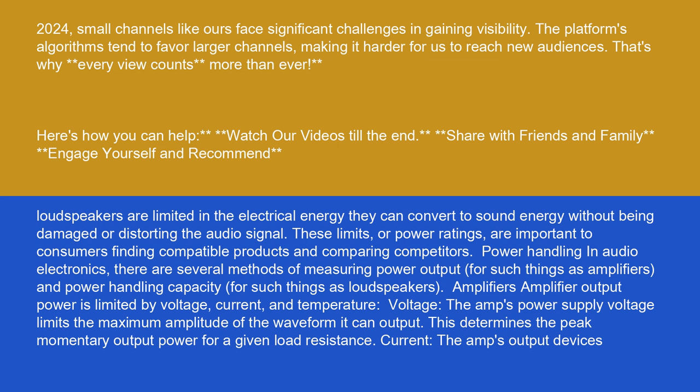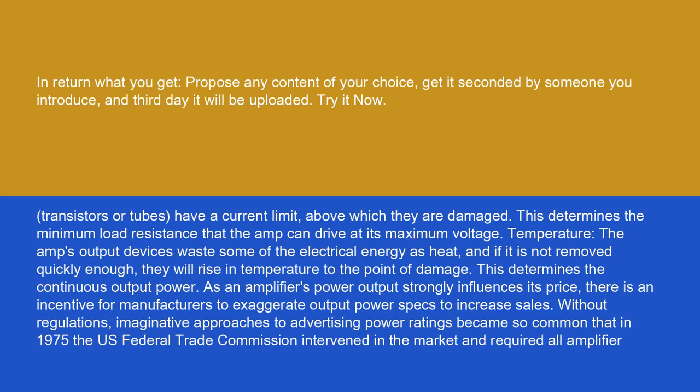Voltage: The amp's power supply voltage limits the maximum amplitude of the waveform it can output. This determines the peak momentary output power for a given load resistance. Current: The amp's output devices, transistors or tubes, have a current limit above which they are damaged.